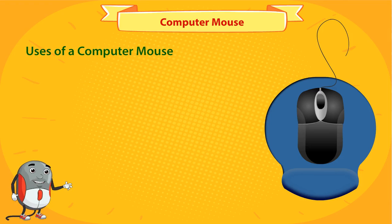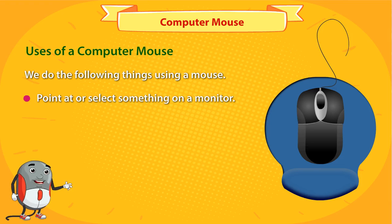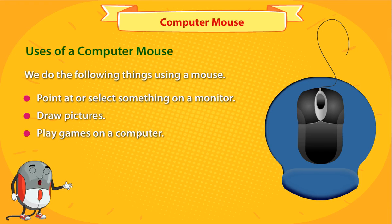Uses of a computer mouse. We do the following things using a mouse: point at or select something on a monitor, draw pictures, and play games on a computer.